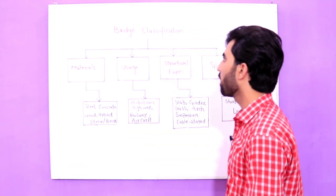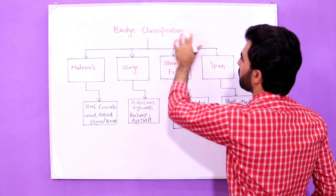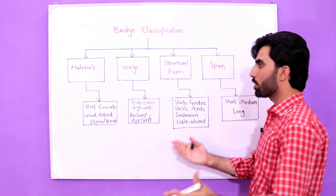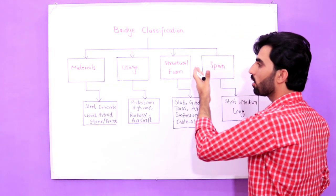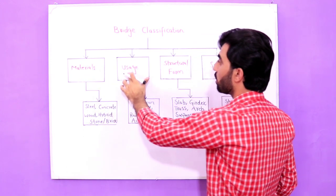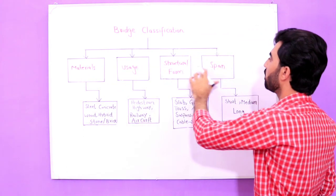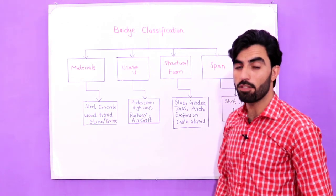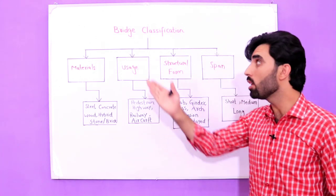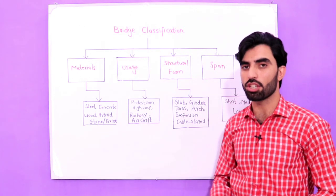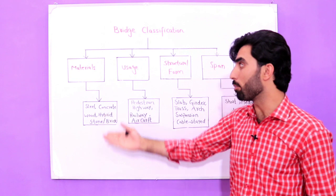Bridge classification: as you can see, in first stage we have four categories. The first one is materials, then usage, structural form, and span for bridge.